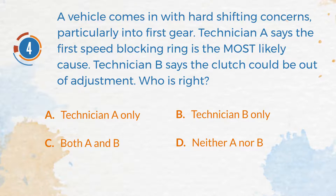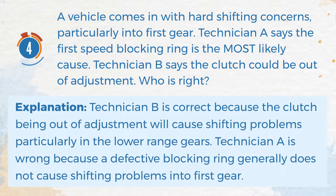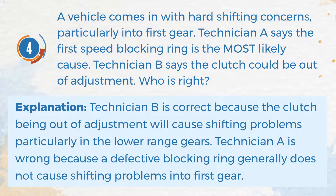The correct answer is B: Technician B only. Explanation: Technician B is correct because the clutch being out of adjustment will cause shifting problems, particularly in the lower range gears. Technician A is wrong because a defective blocking ring generally does not cause shifting problems into first gear.